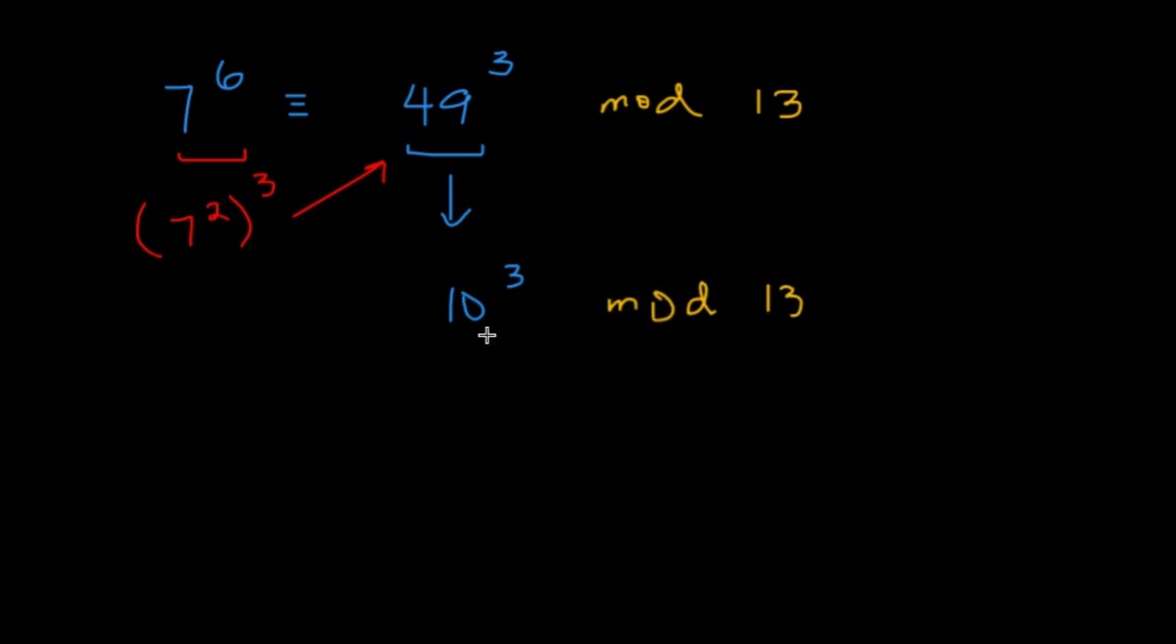But I can actually do a little bit better. Like 10 cubed, I can also make it negative 3 cubed. Again, negative numbers work in modulo just as fine. So I'll just use the negative 3 instead of the 10 cubed. So negative 3 cubed mod 13. So negative 3 cubed, that's going to be negative 27. Right? Negative 27 mod 13.